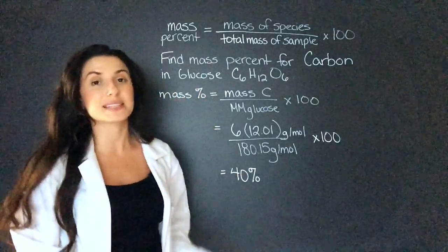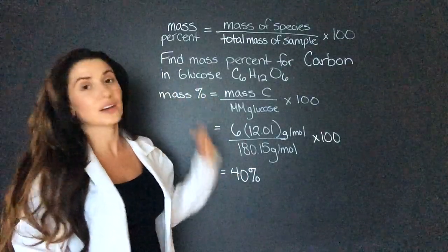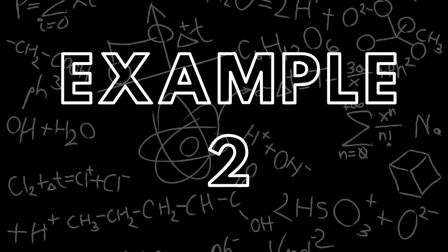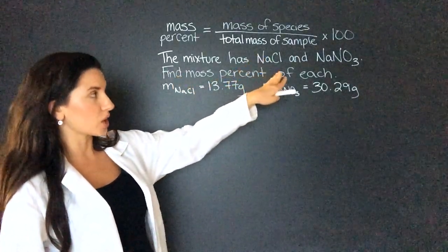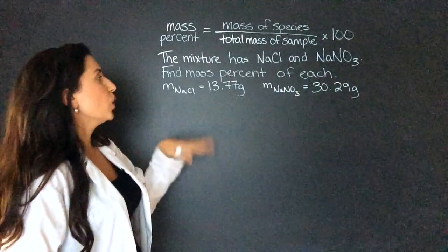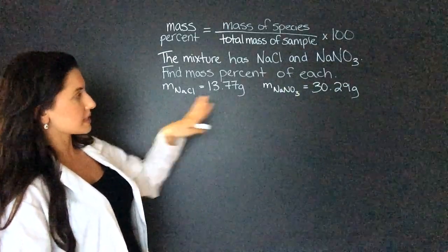Now I know that carbon makes up 40 percent of the mass of glucose. My next example says there's a mixture of sodium chloride and sodium nitrate. We need to find the mass percent of each, and it gives us the